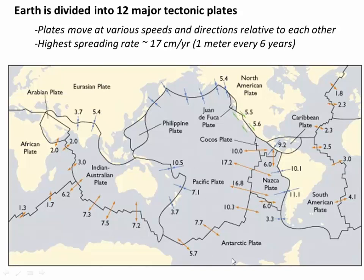Effectively, the jigsaw puzzle is being reshuffled all the time as these plates change shape and size. This is generally happening slowly, but not that slowly. For example, the maximum spreading rate is actually 17 centimeters per year — that's pretty fast, that's a meter every six years. So literally, if you were standing on the Pacific Plate, you'd be moving away from a point on the Nazca Plate one meter every six years. That's certainly fast enough to notice.